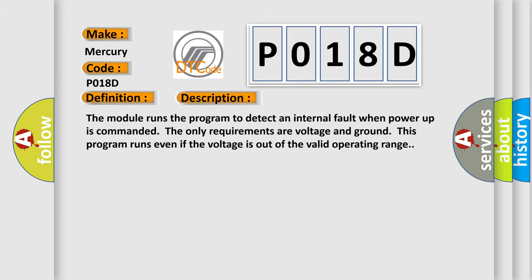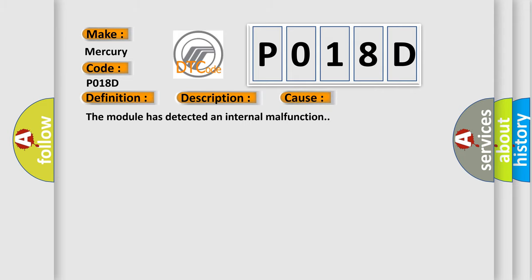The module runs the program to detect an internal fault when power-up is commanded. The only requirements are voltage and ground; this program runs even if the voltage is out of the valid operating range. This diagnostic error occurs most often in these cases: The module has detected an internal malfunction.